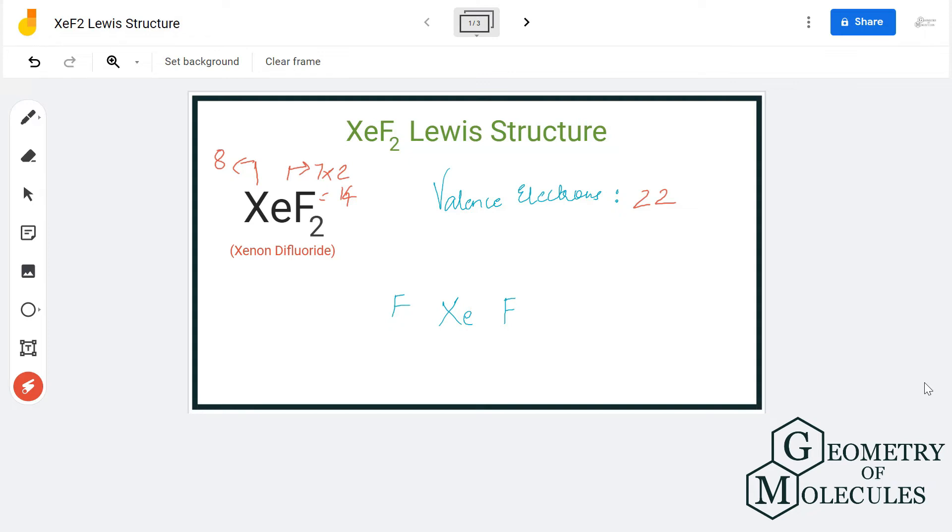We will place xenon in the center because fluorine is more electronegative than xenon. So fluorine atoms will go on the outside and xenon will come in the center. We will place all the valence electrons around all the atoms like this.